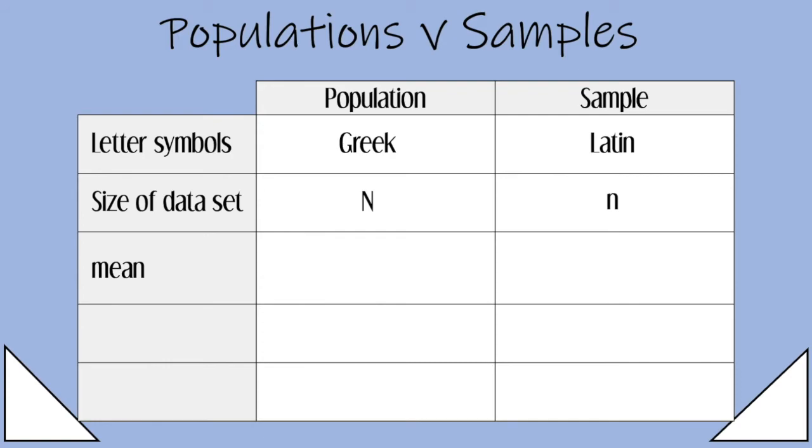First up is the mean. So for populations and samples, well, the formula is the same. You just add up all the values and divide by how many values there are. It's only the labels that are different. The mean of a population is named mu, and the mean of a sample is called x bar.